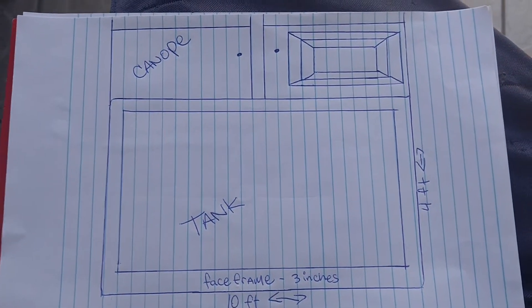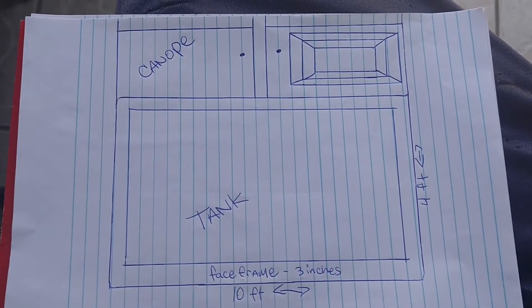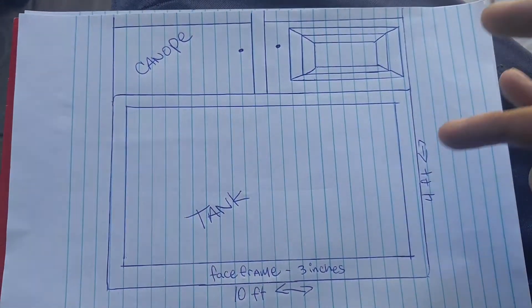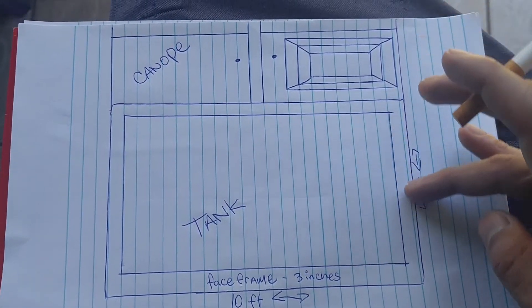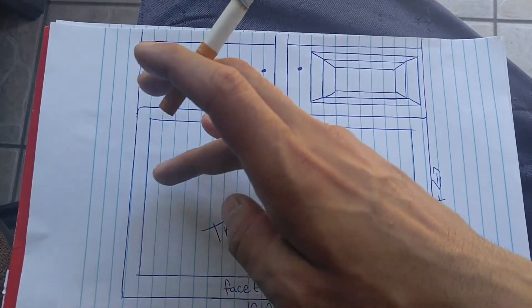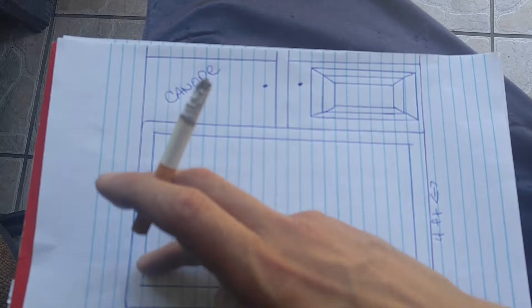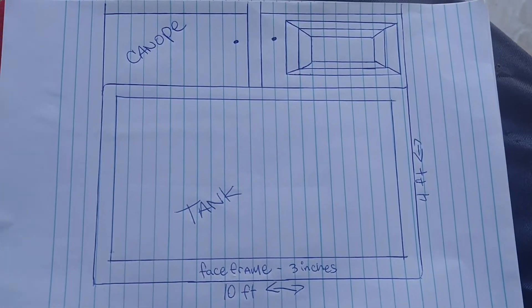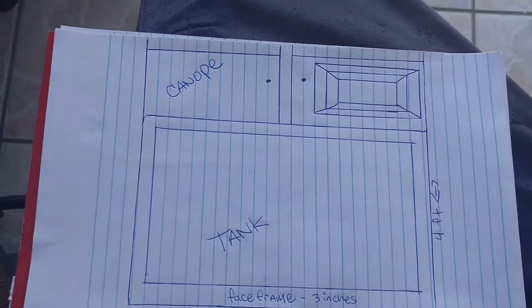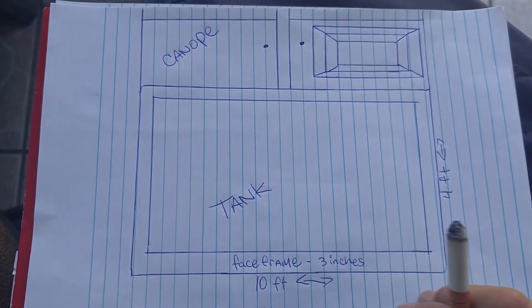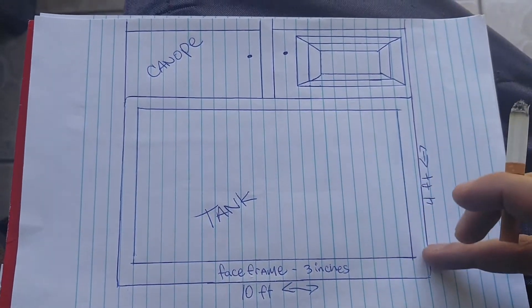So here's my rough sketch - the tank, the canopy, the trimming. Behind this trimming is where the built-in filter is going to be. I haven't chosen which side yet, depends on the placement of the tank. As you can see, it's going to be 10 feet long, 4 feet tall,